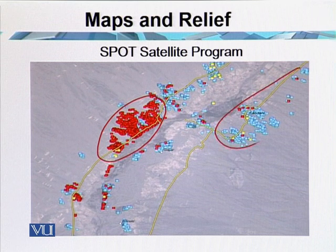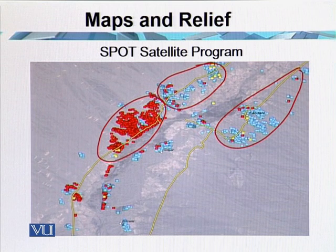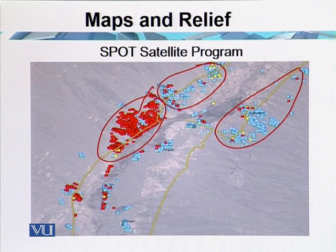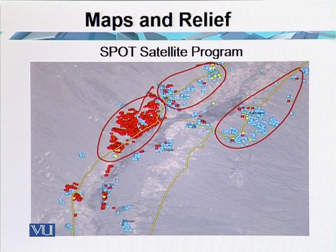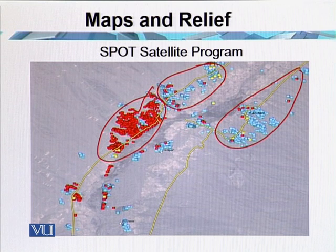These are the low risk zones, where economic and human losses have decreased. The high risk zones are where there is significant damage. So this is the earthquake footage from the SPOT satellite program. We can see a lot of disasters and natural hazards, and we can observe the pre-disaster and post-disaster impacts.